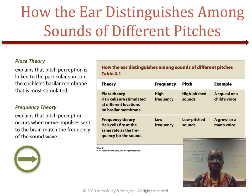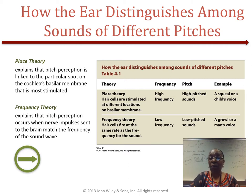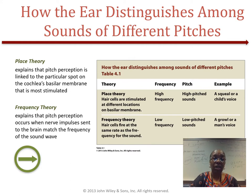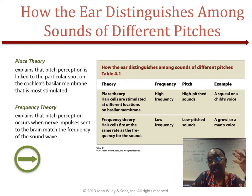To sum this up, both place and frequency theories are correct. Place theory better explains how we hear high-pitched sounds, and frequency theory best explains how we hear low-pitched sounds. Interestingly, as we get older, we lose our ability to hear high-pitched sounds while still being able to hear low-pitched sounds.